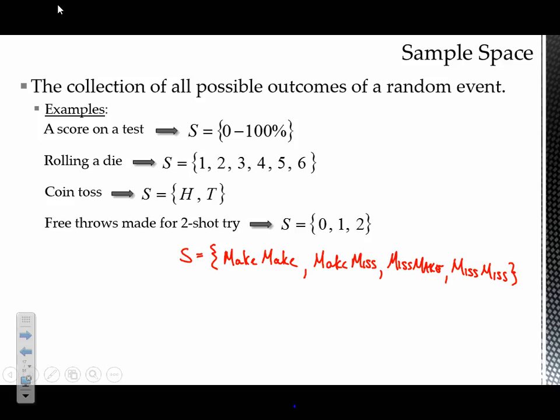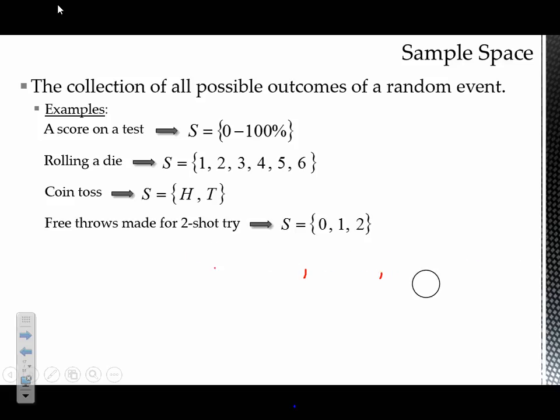One of the things that's important is to pay close attention to what you're actually measuring. In our example, we wanted the number of makes, which means our sample space has to be a set of numbers. If we're recording how we made or missed, then you go through the whole process of make-make, make-miss, miss-make, and so on. Sample space determines everything when it comes to probability.